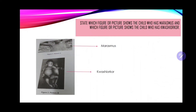The next question asks which picture shows a child with marasmus and which shows a child with kwashiorkor. The child in picture A has marasmus and the child in picture B has kwashiorkor. It is important to note that the swollen belly in picture B is not fat but fluid retention. A child with kwashiorkor tends to look more plump due to swelling, while a child with marasmus may show a pigeon chest with visible ribcages.